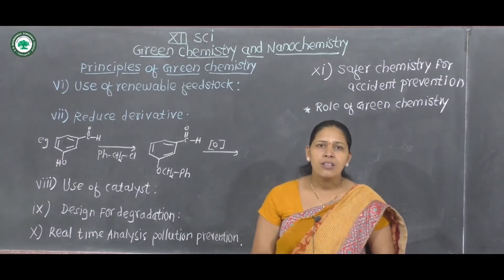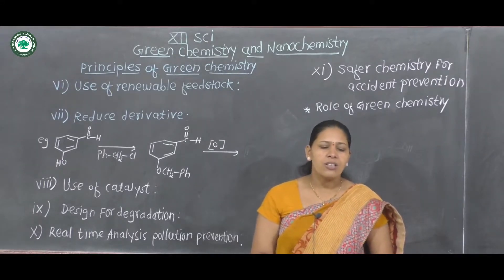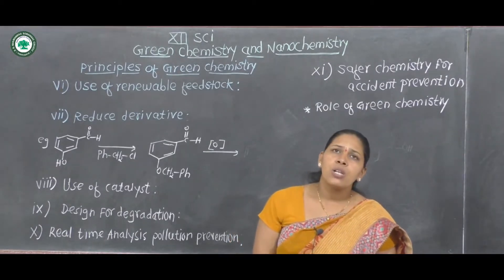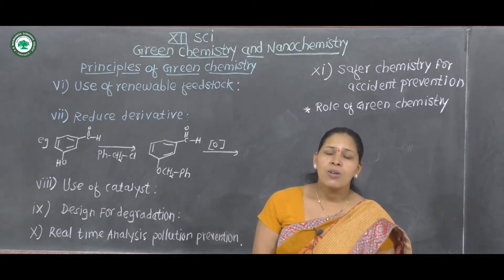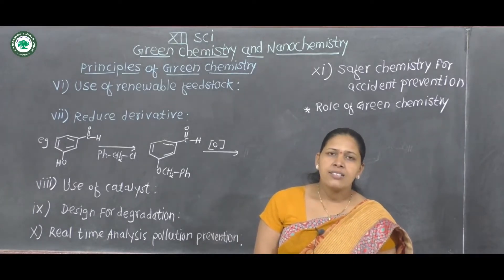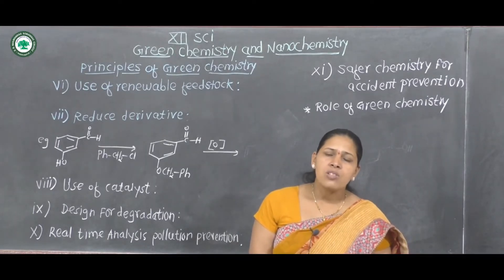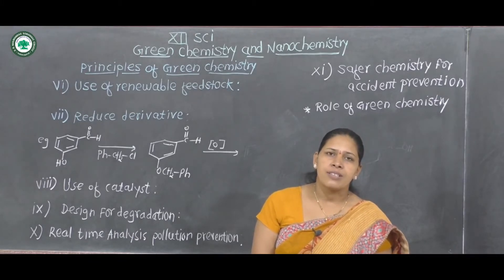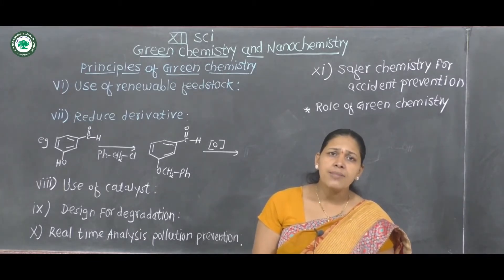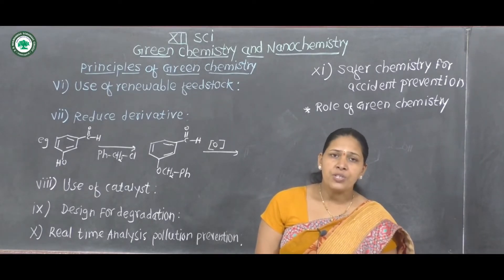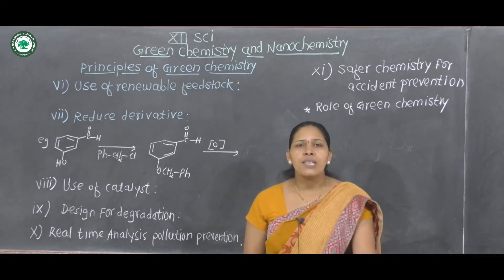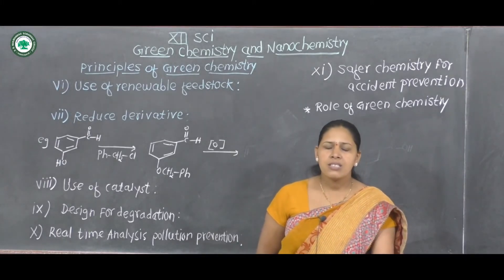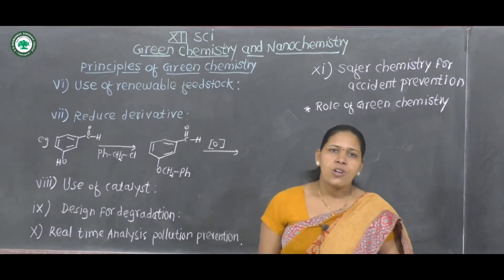The third role of green chemistry is that it is useful to control the greenhouse effect and global warming. These are the three main roles of green chemistry, which we adopt for sustainable development for future generations. This is all about green chemistry. In the next lecture we will discuss nanochemistry and nanotechnology.